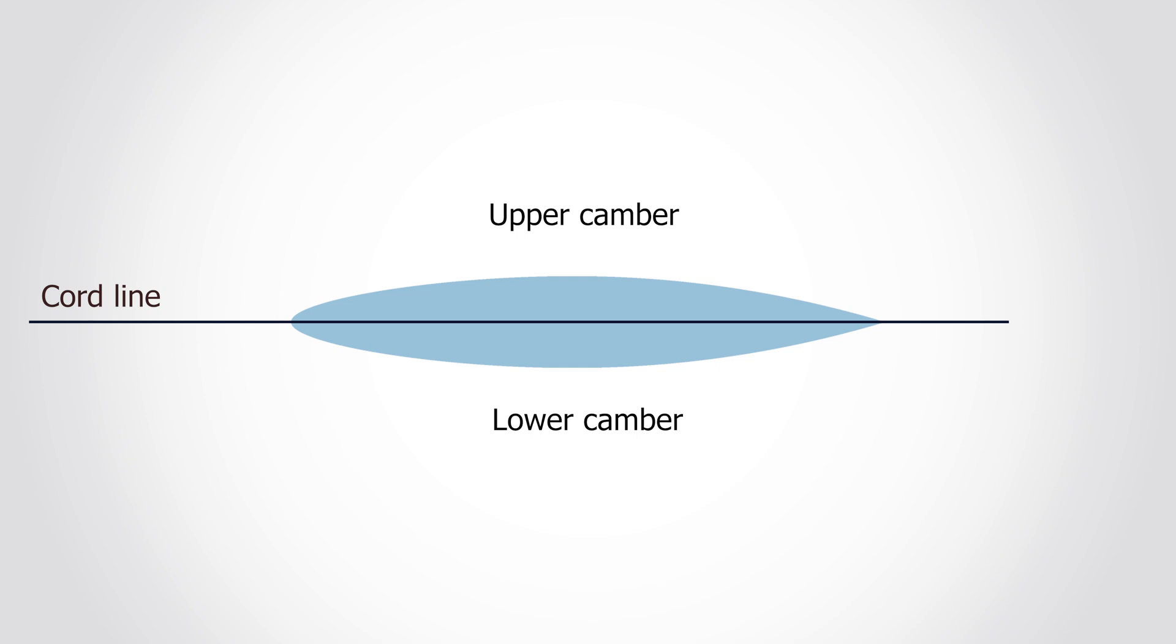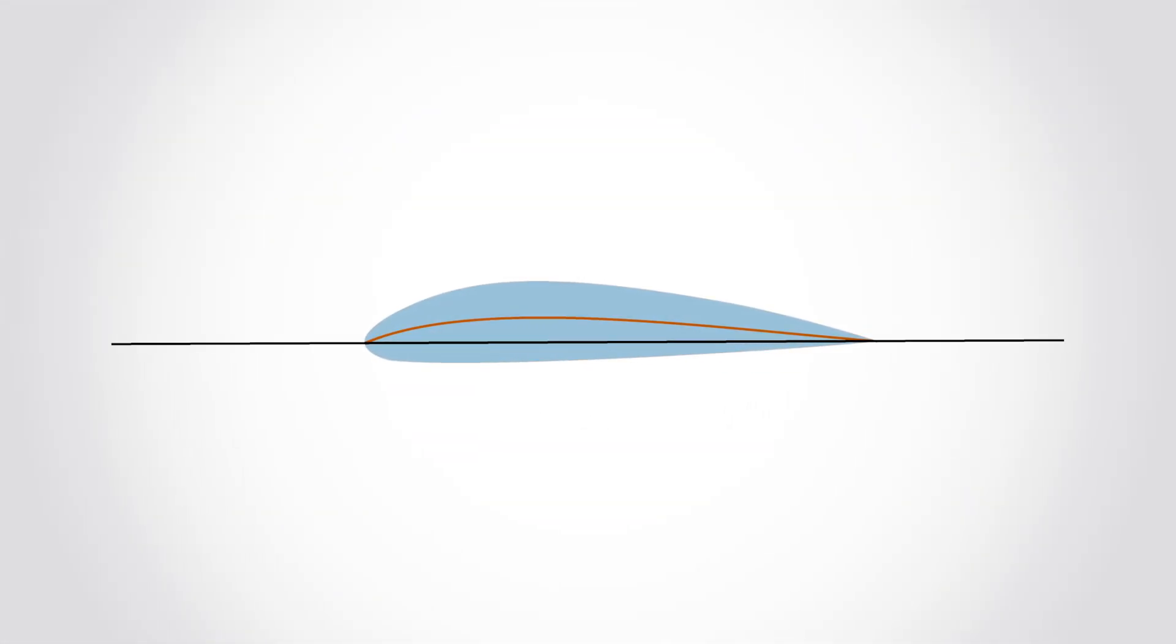The camber line is a line which is drawn equidistant from the lower and upper camber. Notice how the camber line is in line with the cord line? This is due to the shape of the asymmetrical airfoil. If we take a look at an asymmetrical airfoil, we can clearly see the difference between the cord line and the camber line.